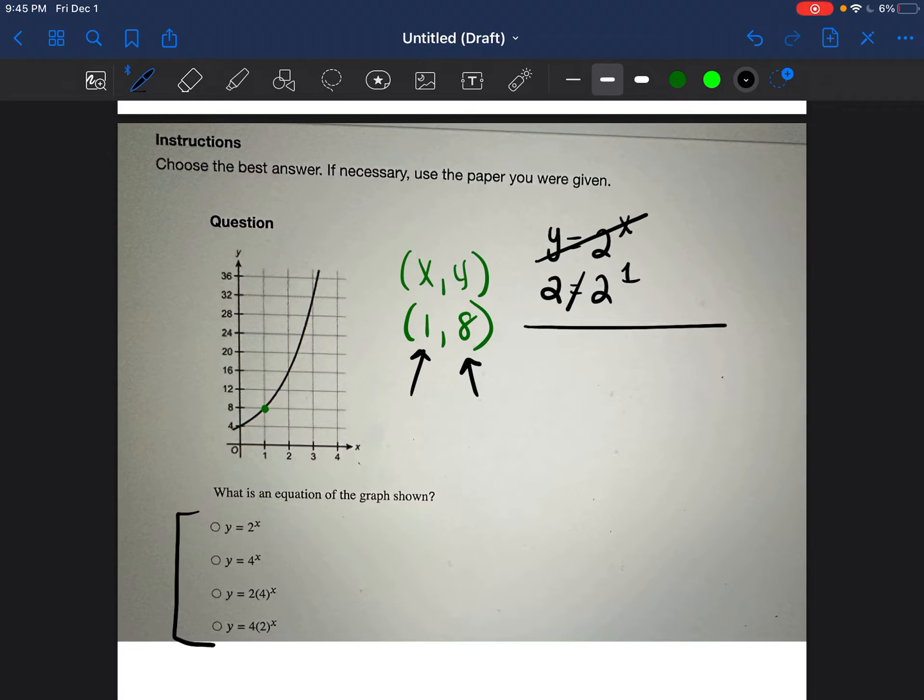Let's go ahead and try the second one. y is equal to 4 to the exponent of x. So we're going to go ahead and again, we're going to put 1 in for x and we're going to see if that's equal to the y, which is 8. So 4 to the exponent of 1 just means 4 one time, which is equal to 4. That is not equal to 8. So then this is not going to be the equation of the line.